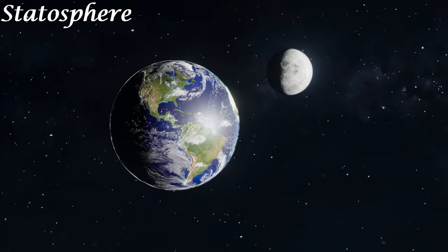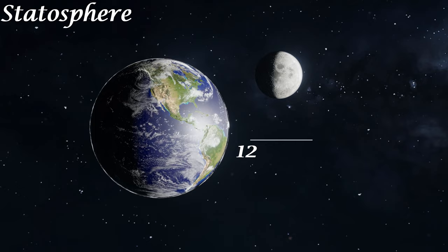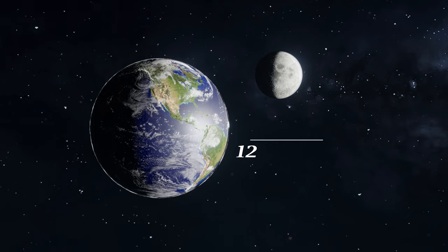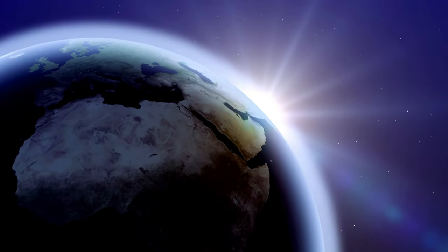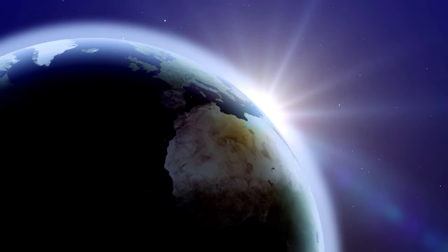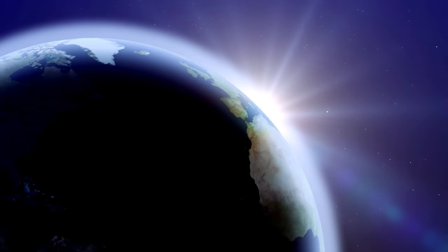Stratosphere: Located between approximately 12 and 50 kilometers, 7.5 and 31 miles above Earth's surface, the stratosphere is perhaps best known as home to Earth's ozone layer, which protects us from the sun's harmful ultraviolet radiation.